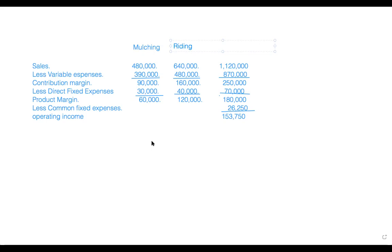Note that there are two types of fixed costs: direct fixed expense and common fixed expense. Direct fixed expense is the fixed cost traceable to each product that would be avoided if the product did not exist. Common fixed expense is fixed costs that are not traceable to individual products and would remain even if the product was eliminated.